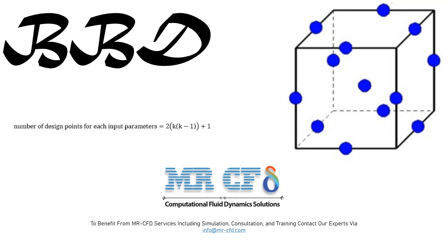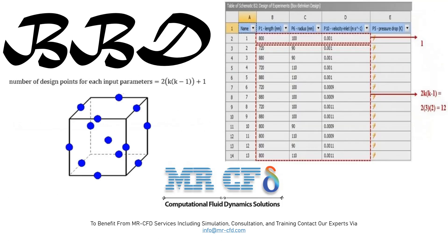This figure shows the design point space in the BBD model for the case with two input parameters. As can be seen, considering two horizontal axes and one vertical axis as the range for selecting design points, the mean value of each input parameter is placed between the maximum and minimum values of the other input parameters.